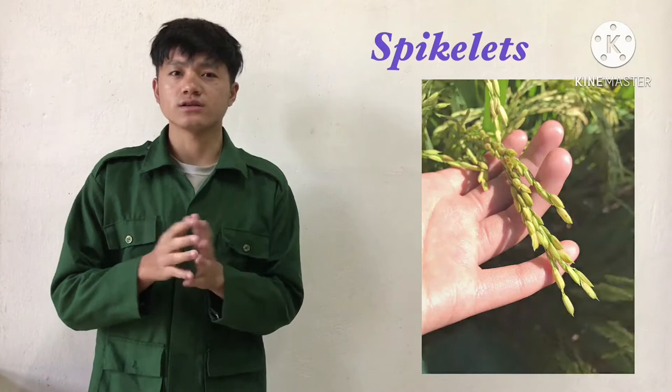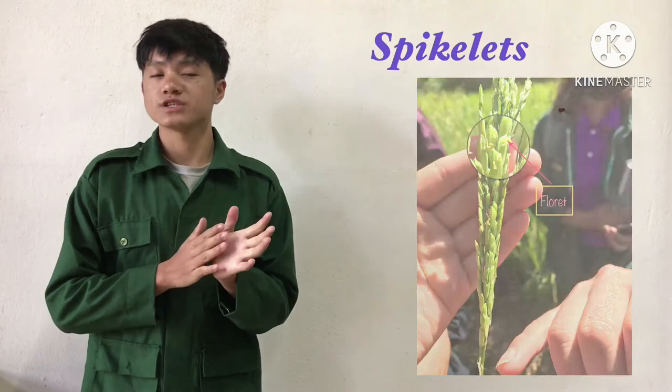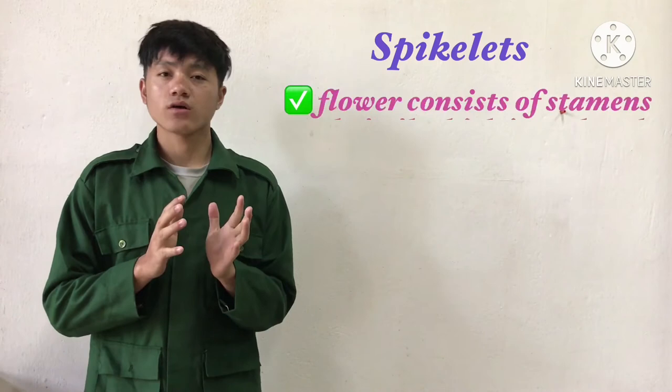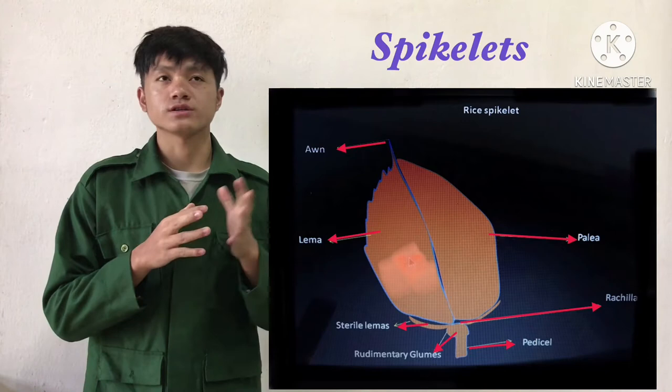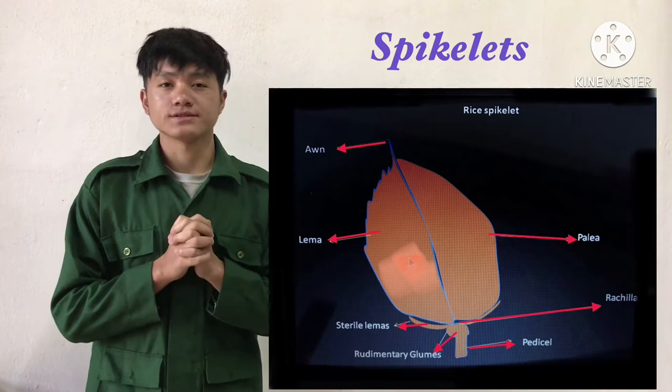The spikelets contain the floral parts, a set of floral plots supported by the lemma and palea. The flower consists of six stamens and pistils. Dr. Mahesh Gimari explained and showed us the floral plot and showed us the sterile lemma, which has a glume-like structure. He also showed us the rudimentary glume, palea, and lemma.